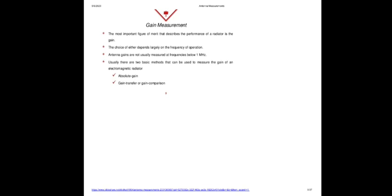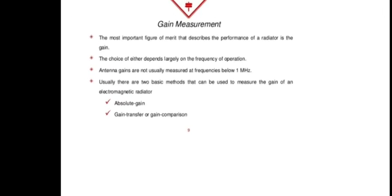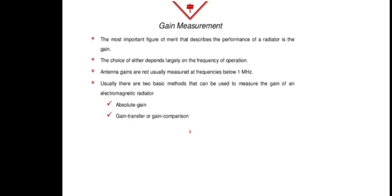This is the gain measurement setup. The most important figure of merit that describes the performance of a radiator is the gain. The antenna gains are not usually measured at frequencies below 1 MHz — only in the RF range should it be operated. There are two basic methods that can be used to measure the gain of an antenna: the absolute gain method and the gain transfer or gain comparison method.